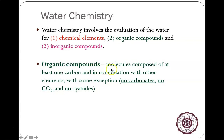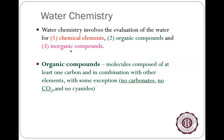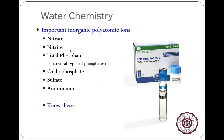Organic compounds are anything that has at least one carbon combined with other elements, with the exception of single-carbon things like calcium carbonate, carbonates such as baking soda (sodium bicarbonate), limestone, or carbon dioxide gas. Big chemicals like oils and greases have many carbons and are organic compounds. Inorganic compounds are everything else — things like iron, manganese, lead, and chlorine.